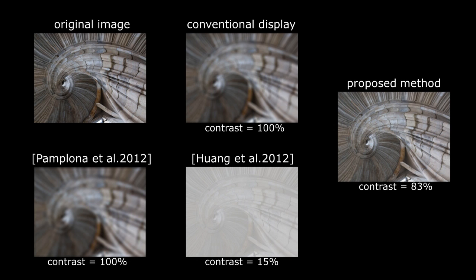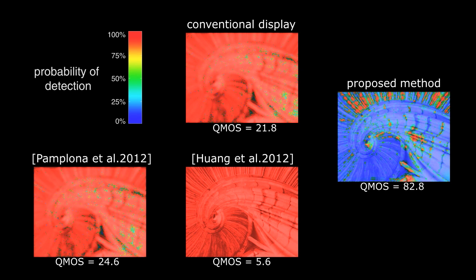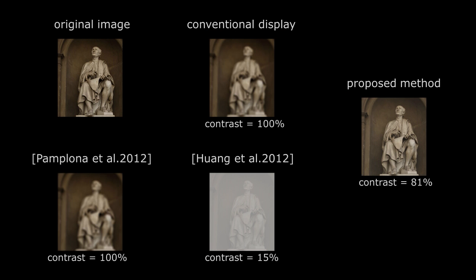In this second example, our result has five times the contrast and more than three times the score. And now, here is the final example.